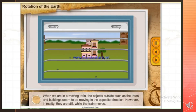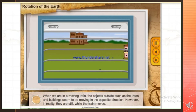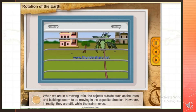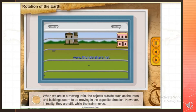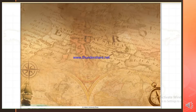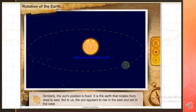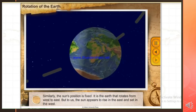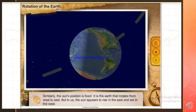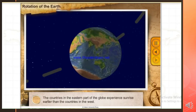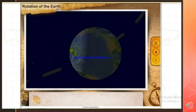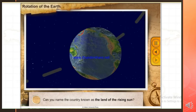When we are in a moving train, the objects outside, such as the trees and buildings, seem to be moving in the opposite direction. However, in reality, they are still, while the train moves. Similarly, the Sun's position is fixed. It is the Earth that rotates from west to east. But to us, the Sun appears to rise in the East and set in the West. The countries in the eastern part of the globe experience sunrise earlier than the countries in the West. The Land of the Rising Sun is Japan.